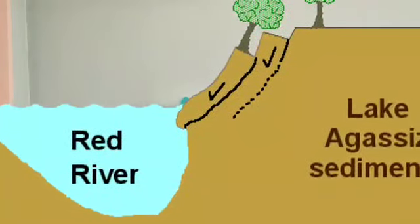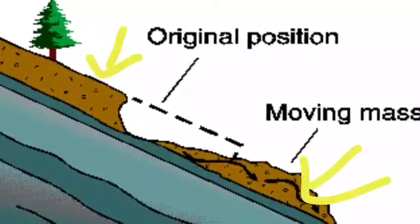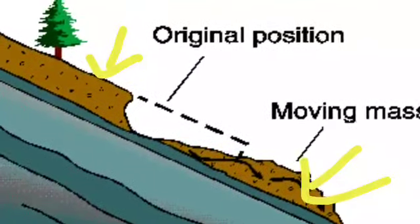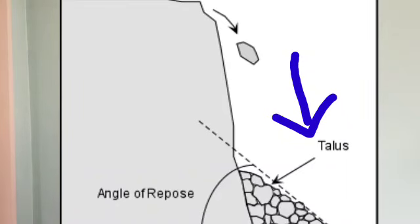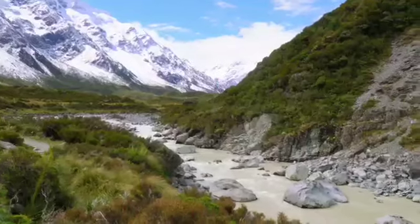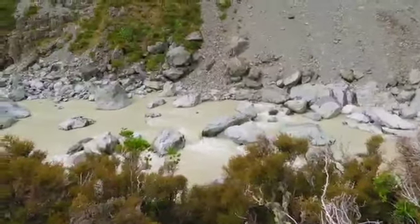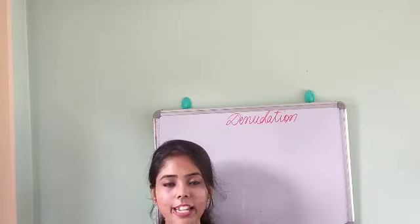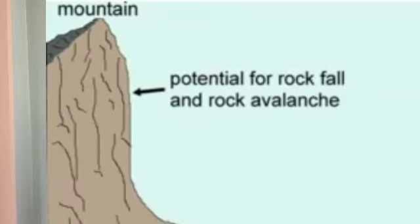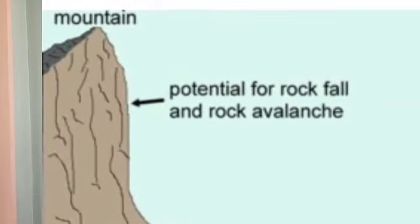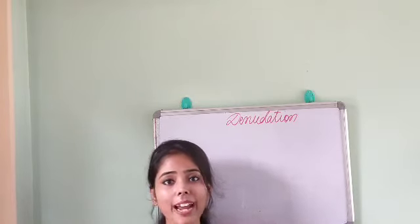In mass wasting, imagine a hilly or mountainous region where particles are loosely packed on the surface. Due to the Earth's gravitational attraction, the particles gradually slide down from the surface of the hilly region to the plain region — that is known as mass wasting. It is a very slow process that takes a lot of time. These are the basic processes that act behind denudation.